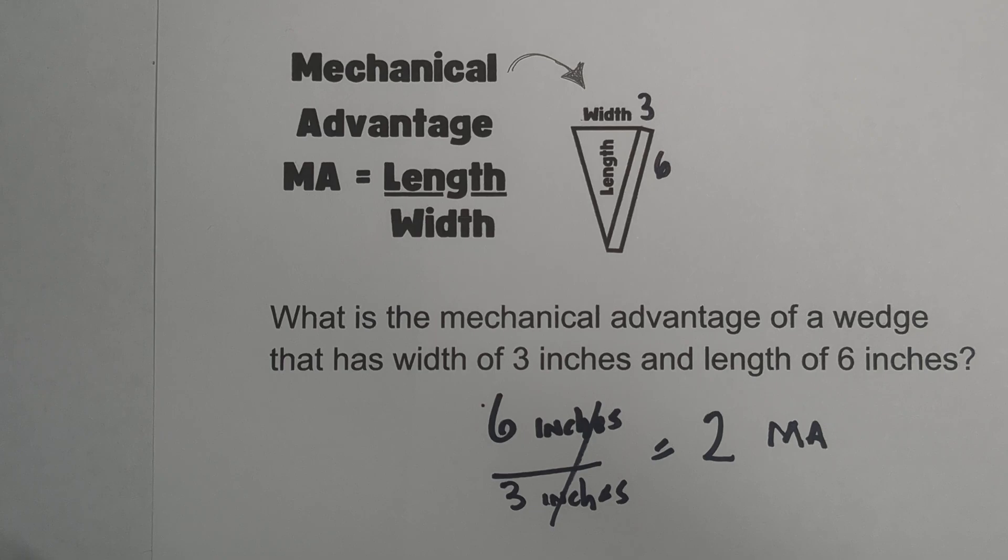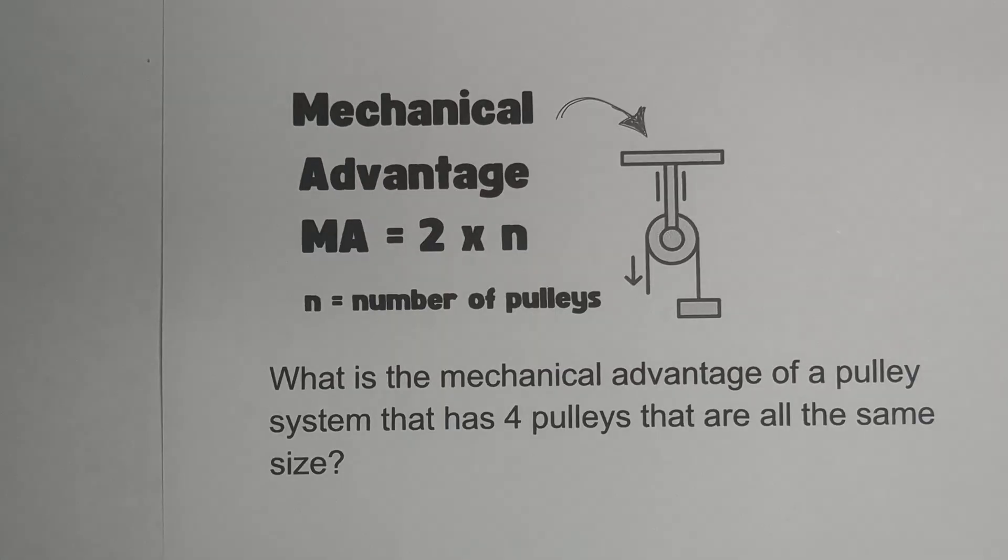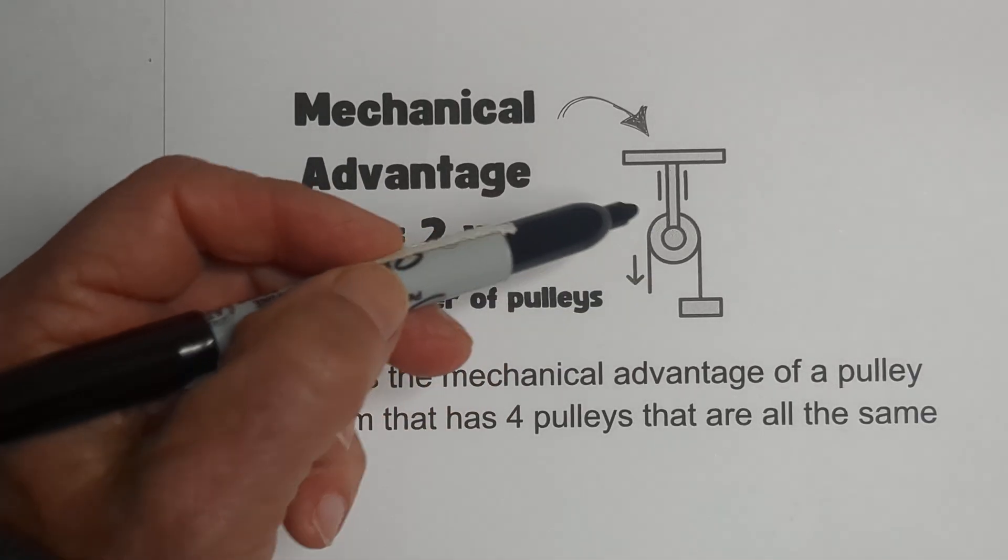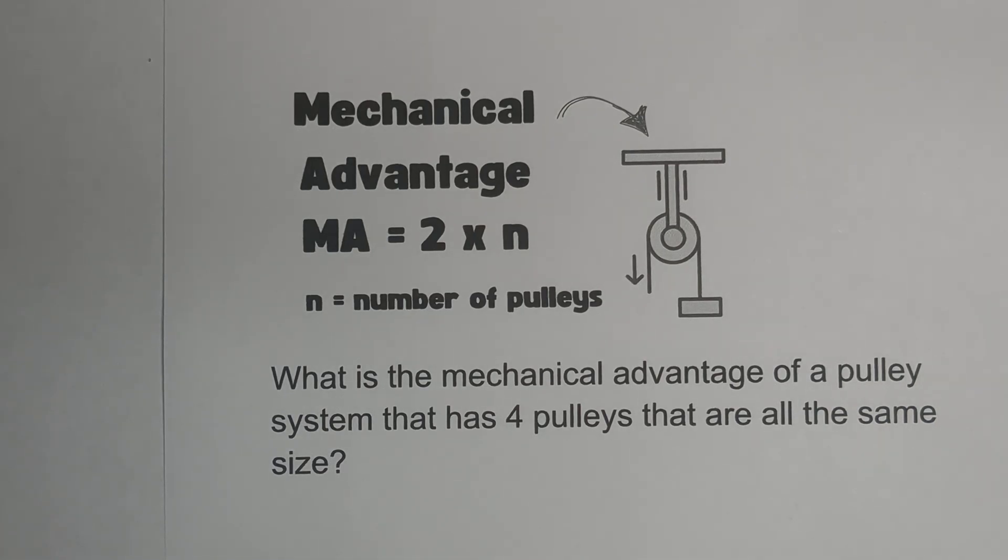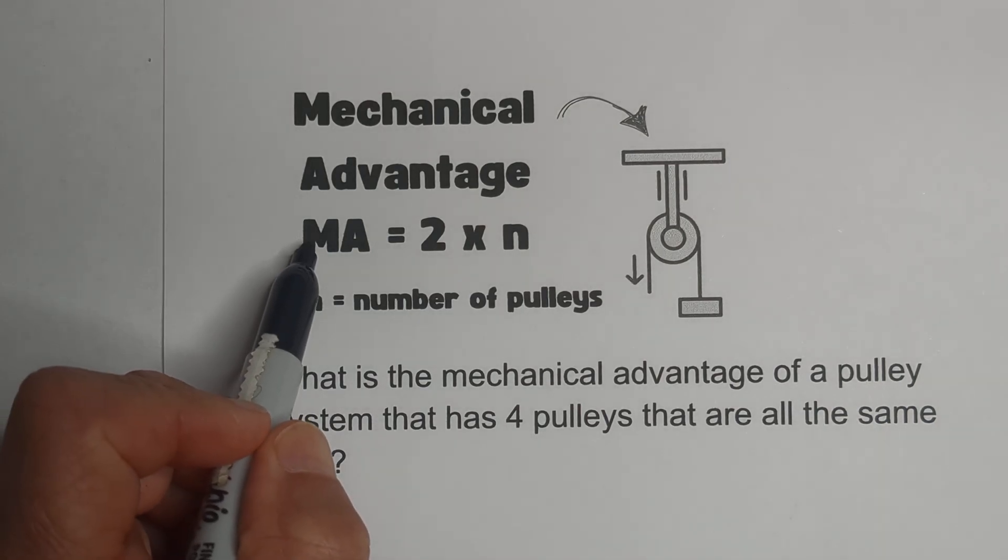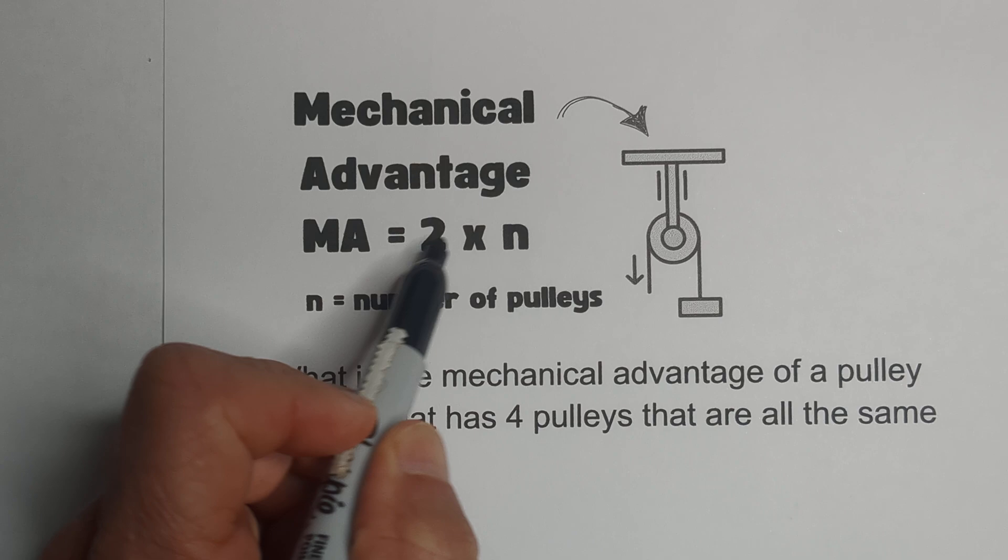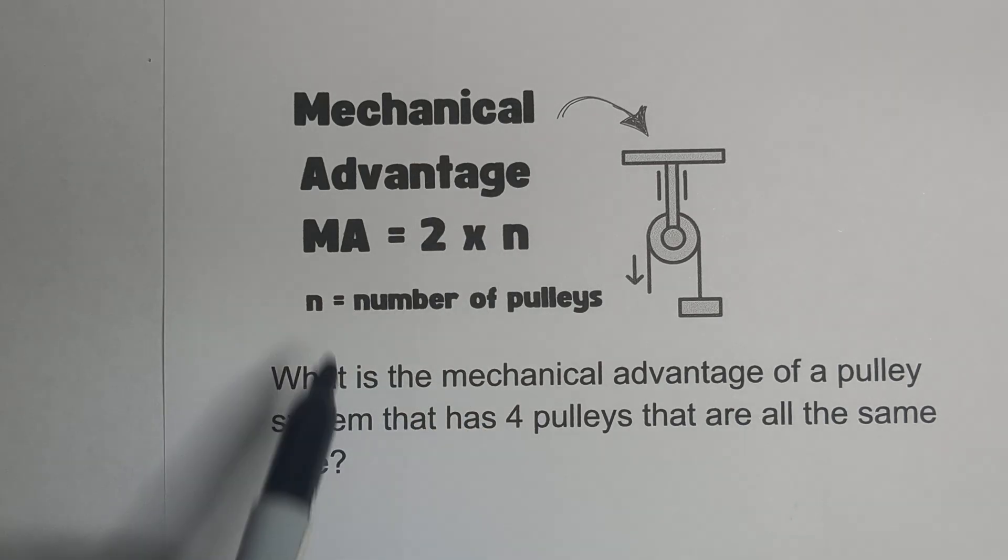Now let's look at a system of pulleys. With pulleys, assuming that they are all the same size, you just use, for the mechanical advantage, 2 times n, and n just equals the number of pulleys.